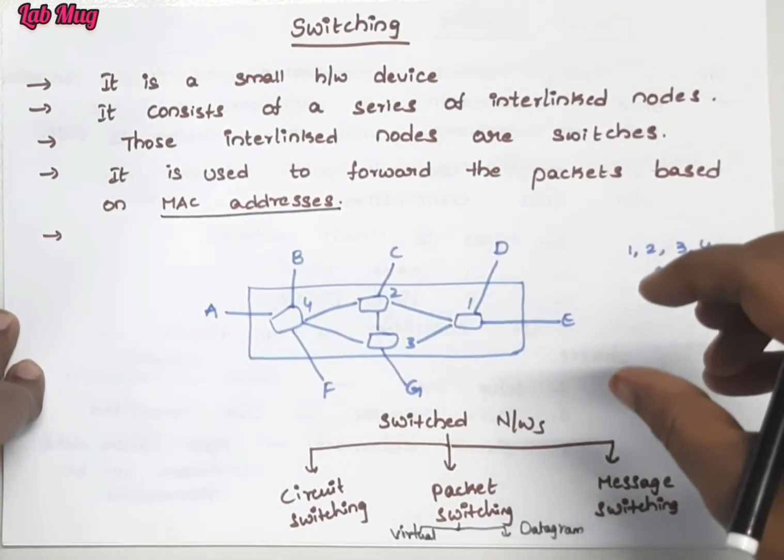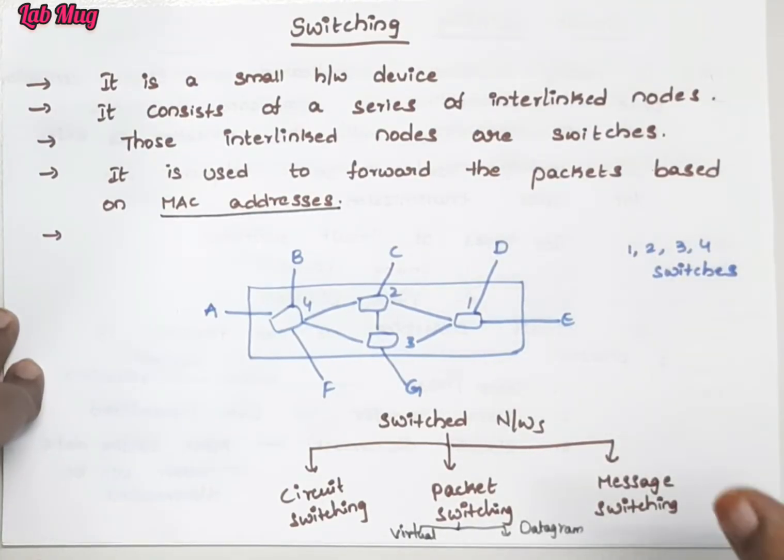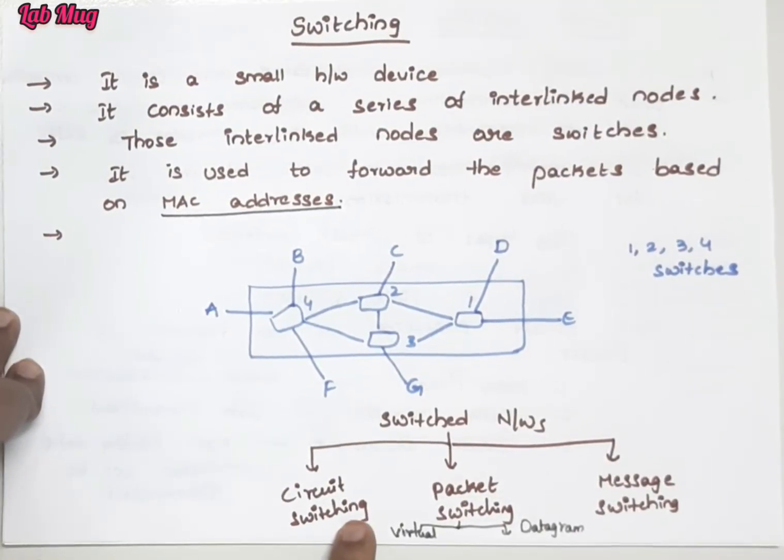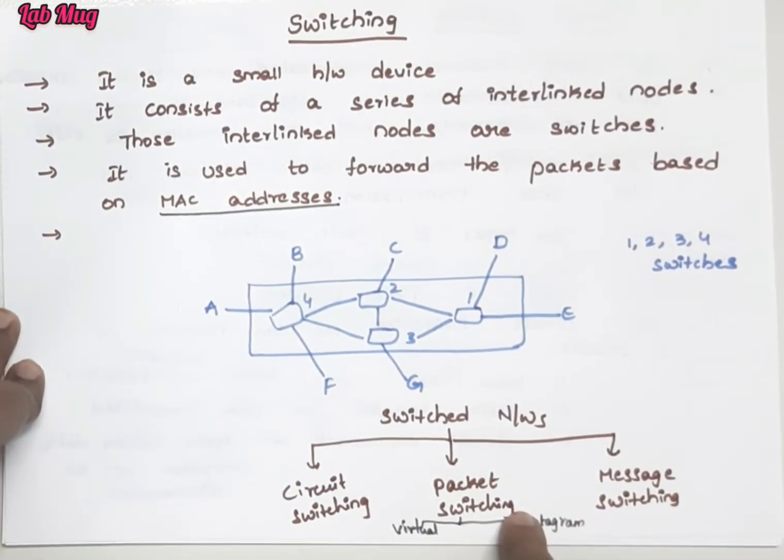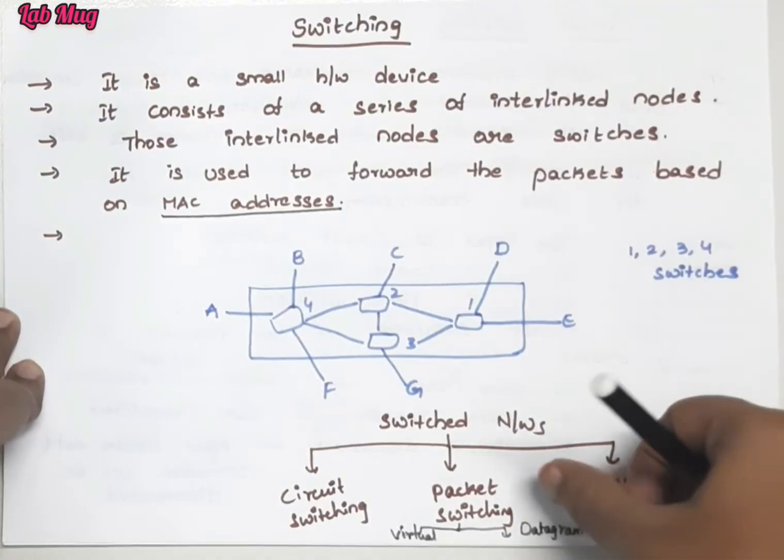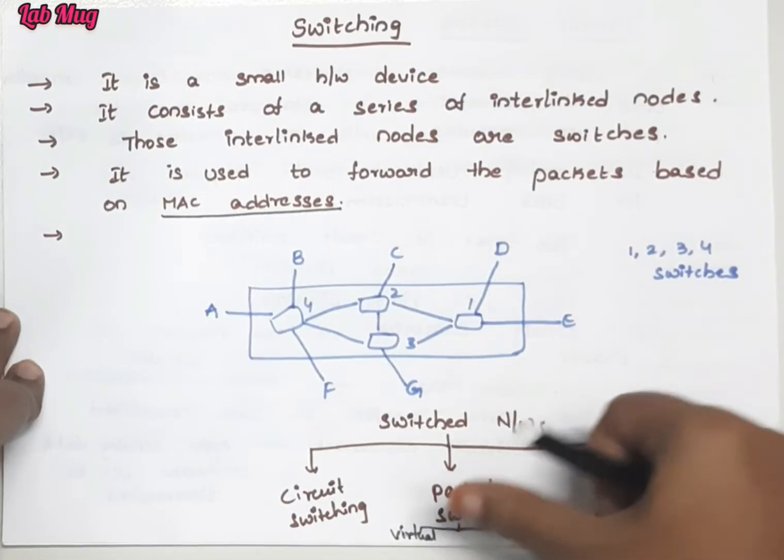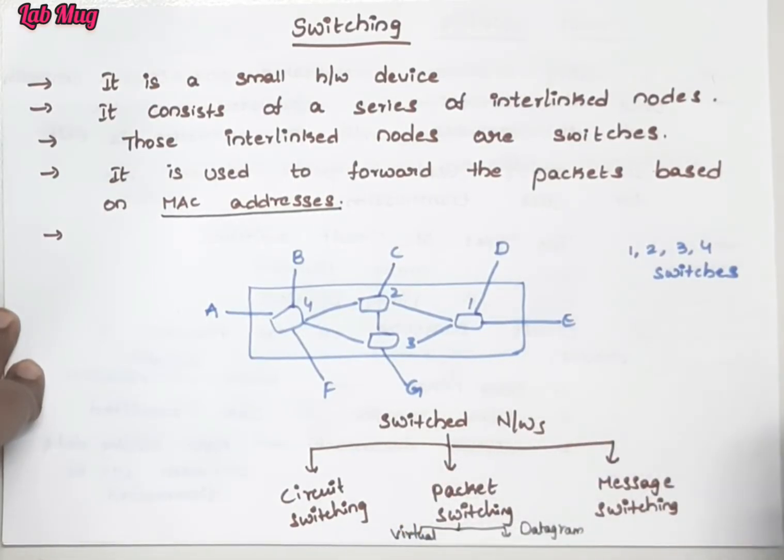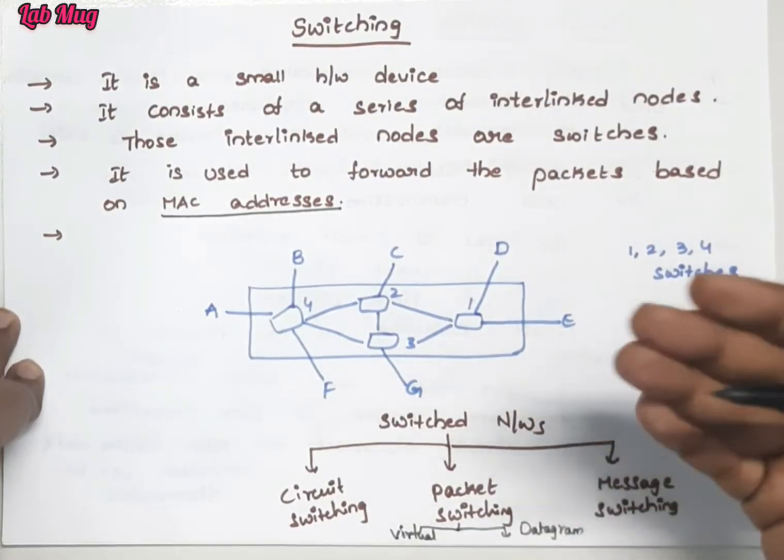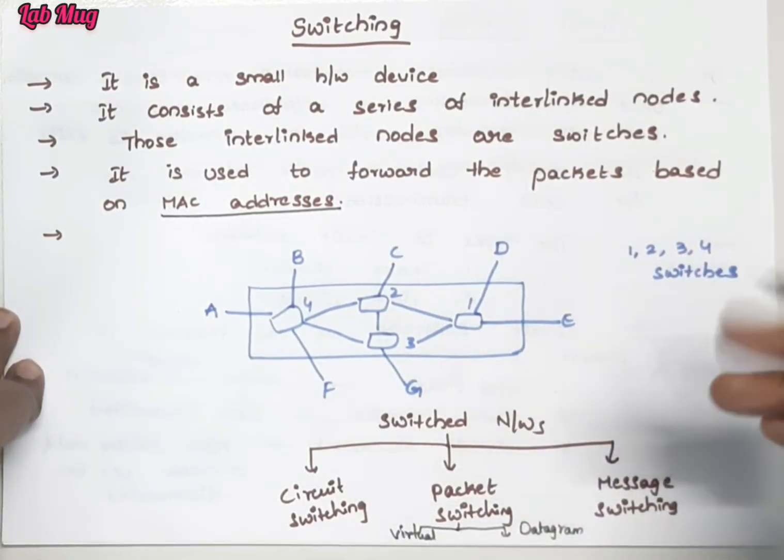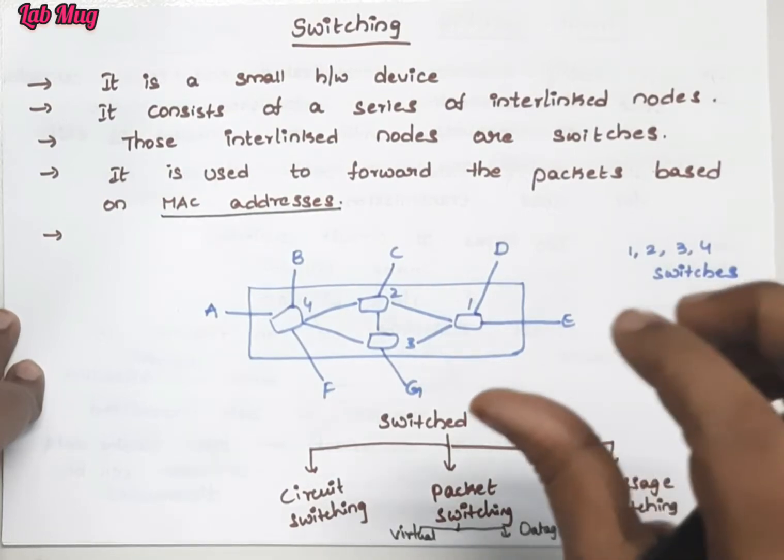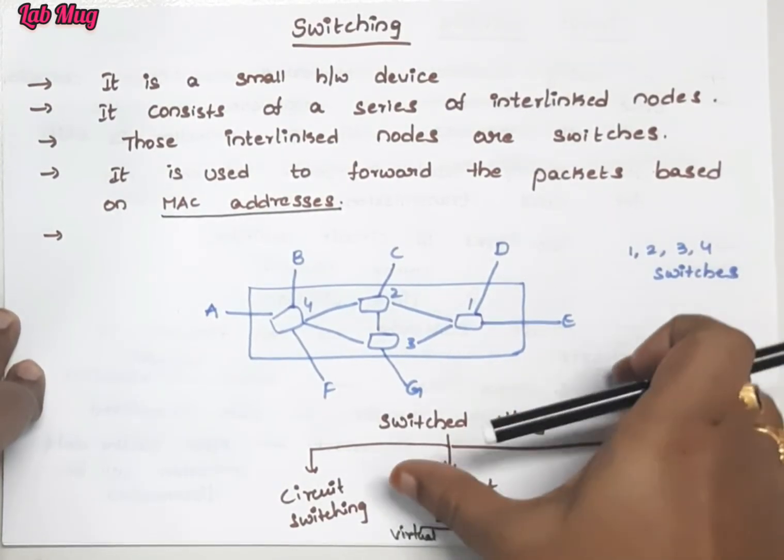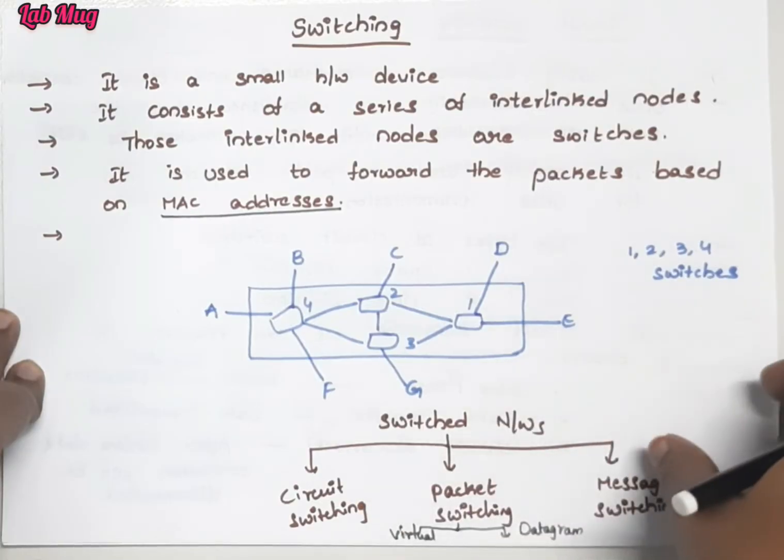In switching we have three types of techniques: circuit switching, packet switching, and message switching. They have different categories. For example, packet switching is divided into virtual and datagram switching. Circuit switching and message switching are also very important. We use these three techniques to establish the switching concept. First we'll discuss circuit switching.